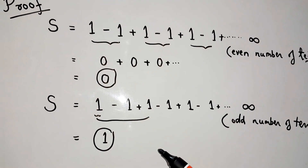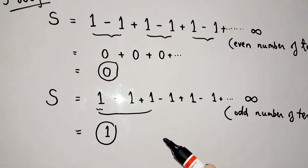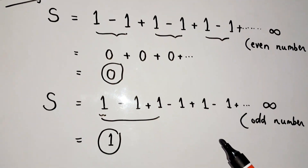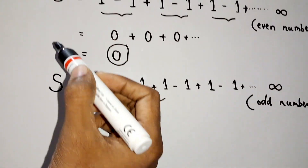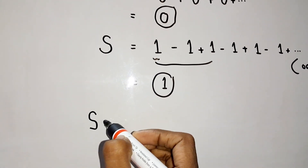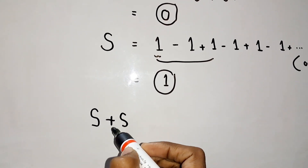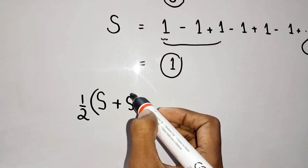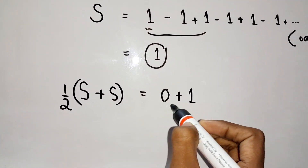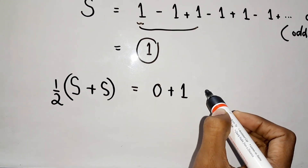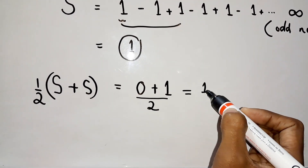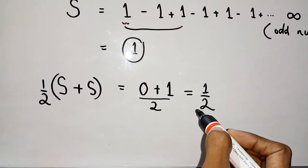So now what we can do — our main aim is to find the summation of the first infinite terms of natural numbers, which should equal minus 1 by 12. Now what we can do is take the average of these two. That means S plus S by 2 equals 0 plus 1 by 2. Once we got 0 for even number of terms, and 1 for odd number of terms, the average is one half.